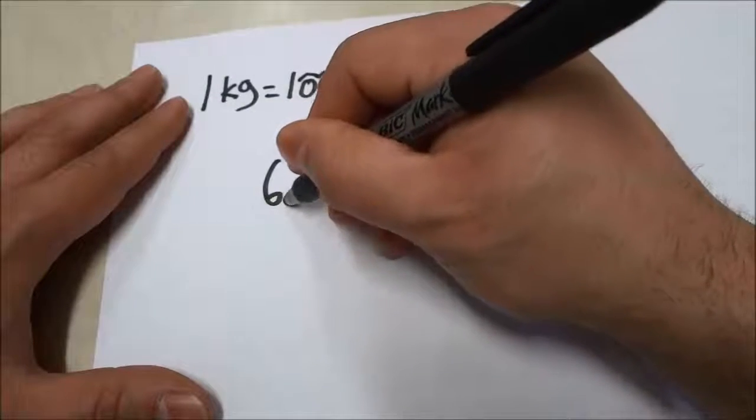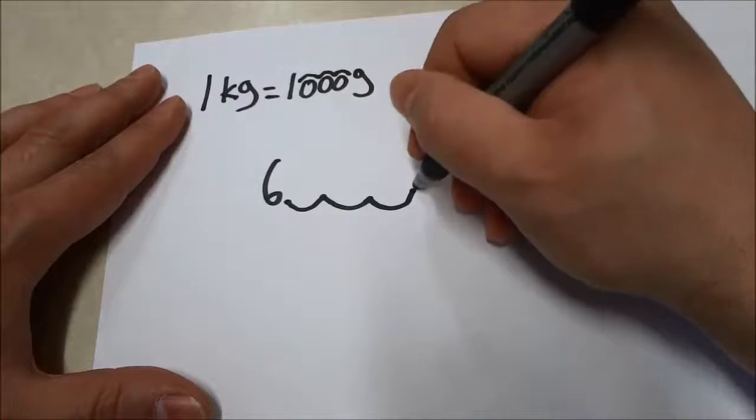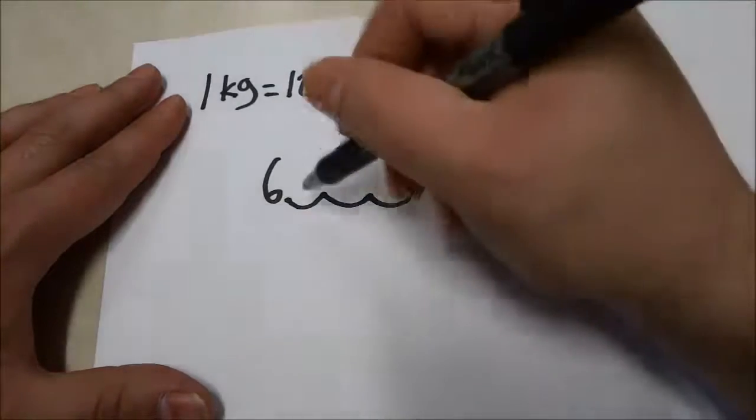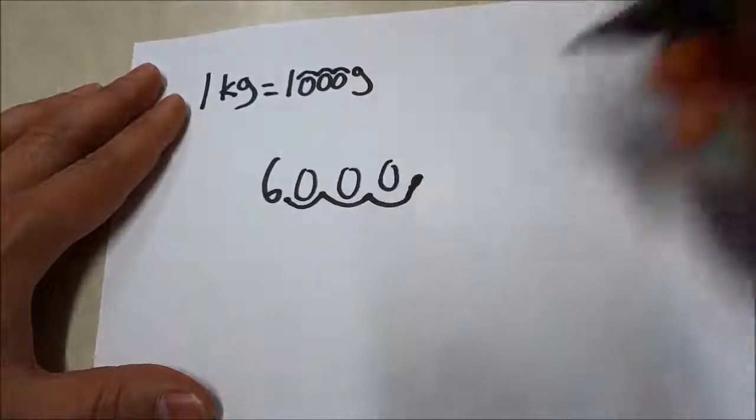So we're going to take the decimal, we're going to move it 1, 2, 3 spaces towards the right. And I'm just going to put the decimal there and I'm going to fill the spaces in with zeros. So it would be 1, 2, 3 zeros.